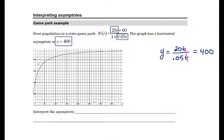y equals 400 is my horizontal asymptote, and I can draw that line in here on my graph. It's right about up here at the top, it looks like.